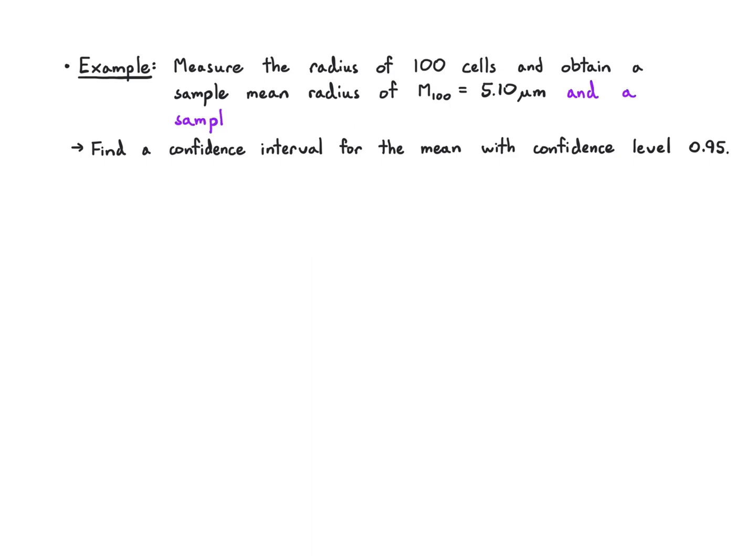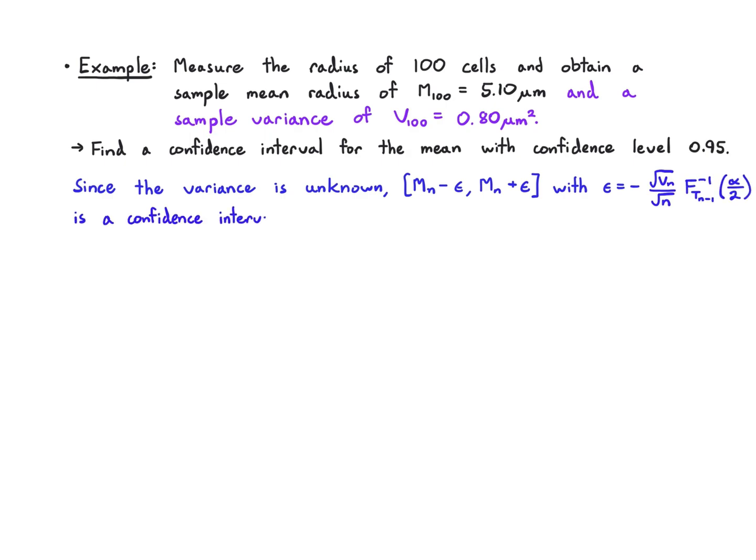So now let's change the setting to say we don't know the variance. What we did is calculated a sample variance of 0.8 microns squared. Since the variance is unknown, the way that we calculate the confidence interval is a bit different. We use this particular choice of epsilon calling the t distribution's inverse CDF.